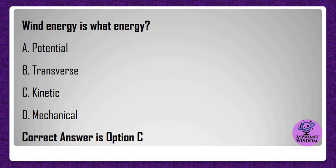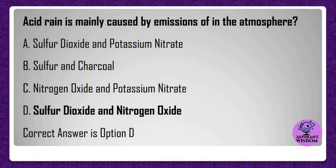Wind energy is what type of energy? A) Potential, B) Transverse, C) Kinetic, D) Mechanical. Correct answer is option C.